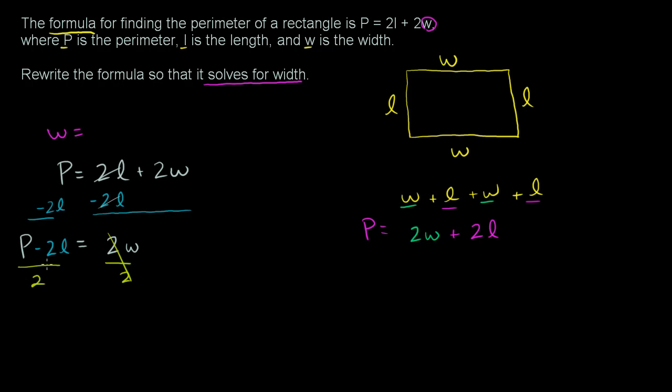And then we have our left-hand side. So we're done. If we just flip these two sides, we have our w will be equal to this thing over here, equals P minus 2l, all of that over 2.